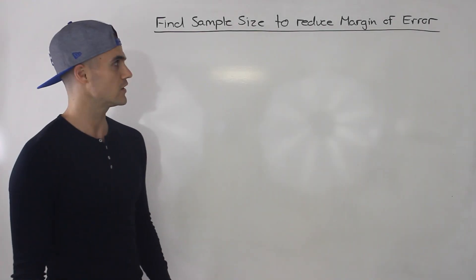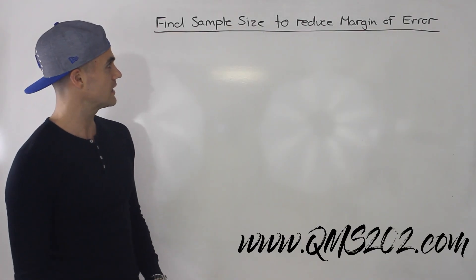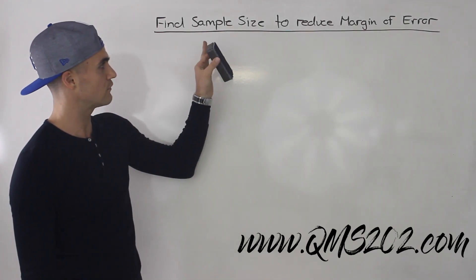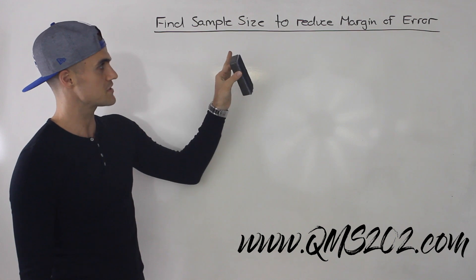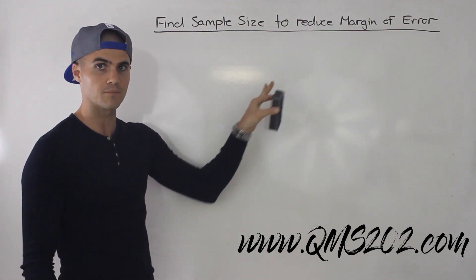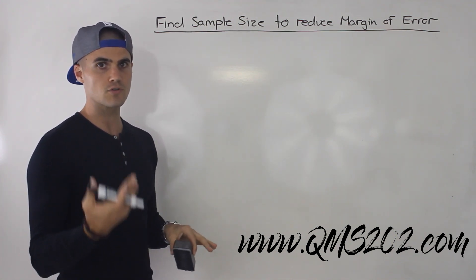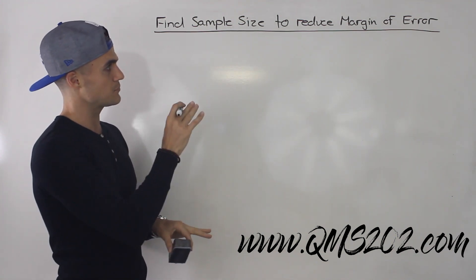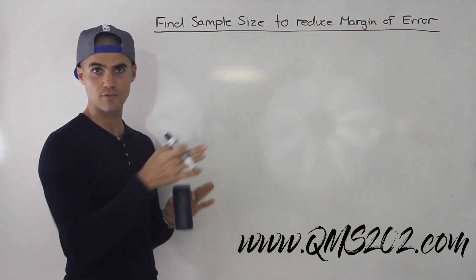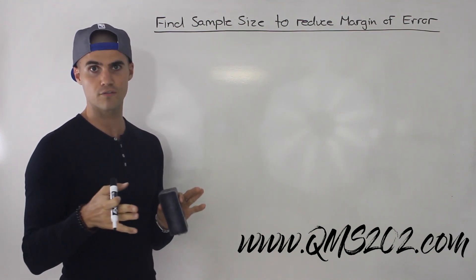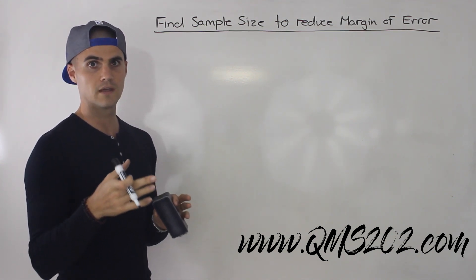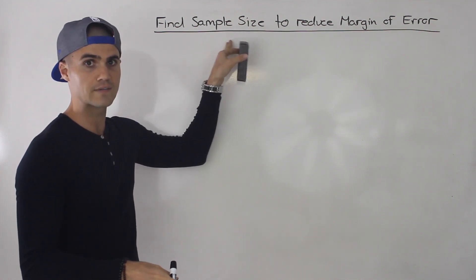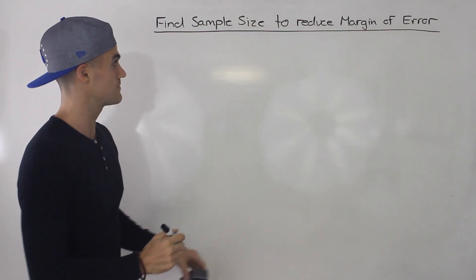What's up everyone, welcome back. Moving on to the next topic, we're now going to talk about how to find the sample size to reduce the margin of error. So far we've been given a sample size and we have to find the margin of error or find a confidence interval. In this case we're going to be given a margin of error and we have to find the sample size.